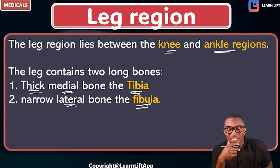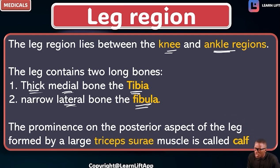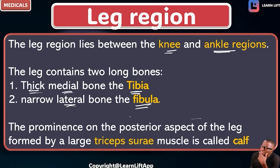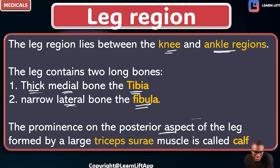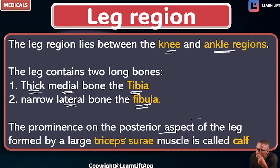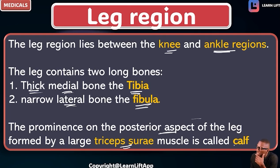The leg contains two long bones: the thick medial bone called the tibia, and the narrow lateral bone called the fibula. Also note that there is a prominence at the posterior aspect of the leg. That prominence is formed by muscles which we call the triceps surae, and those muscles form what we call the calf — so we call them the calf muscles.